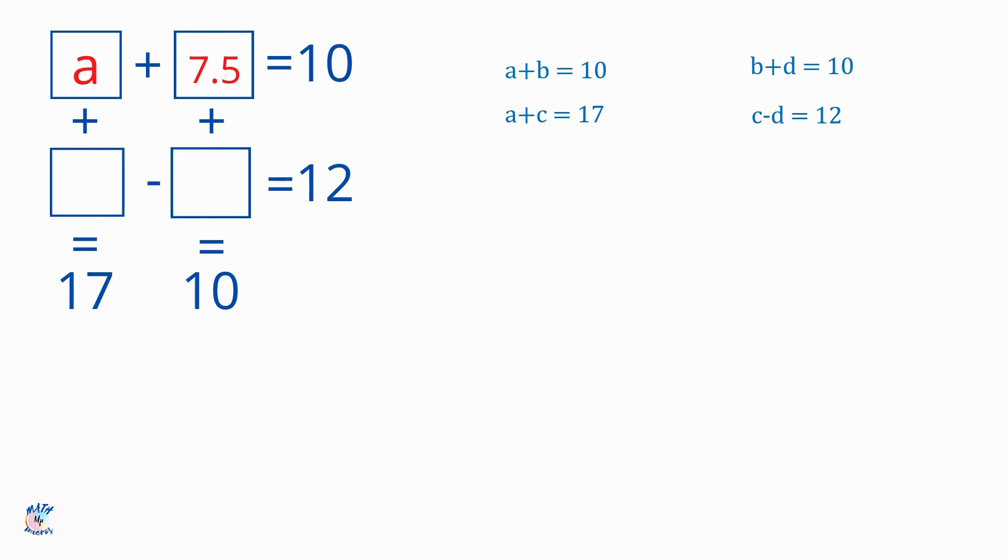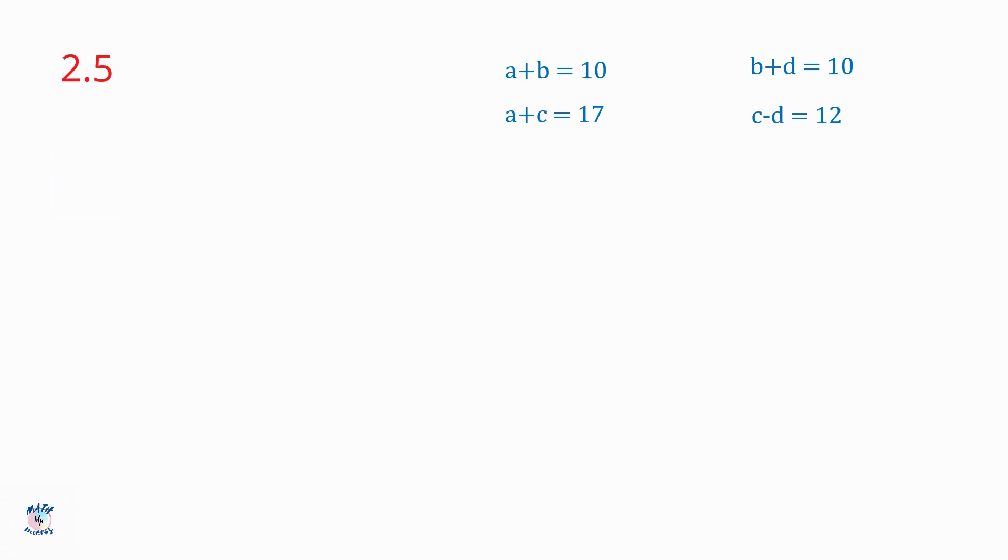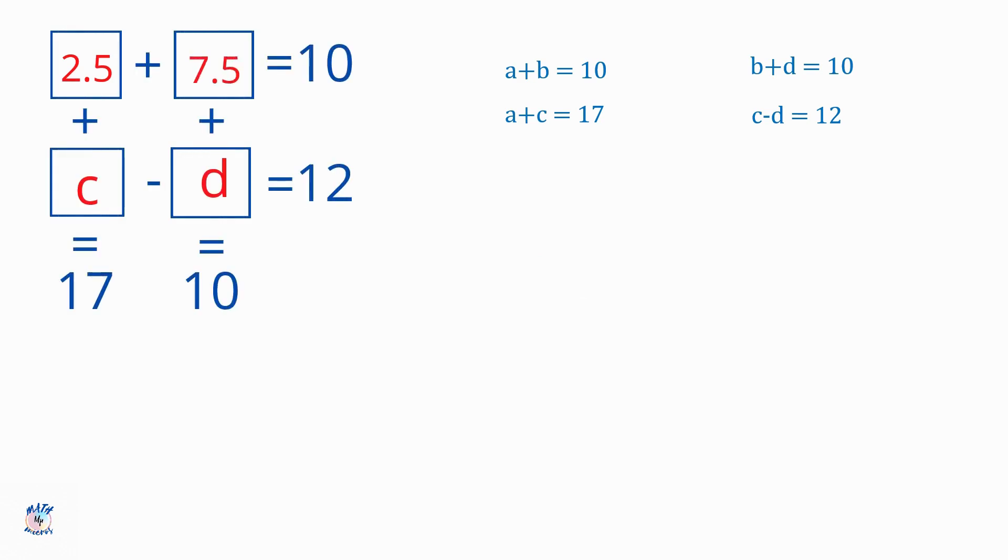Now with this, we can find the other numbers easily. So we are going to look into this equation, A plus B equals 10. Here we know B is 7.5, so I'm going to use this and find A. So A plus B is equal to 10. I'm going to substitute B as 7.5, and then A is equal to 10 minus 7.5, which is 2.5. And now I got A as well.